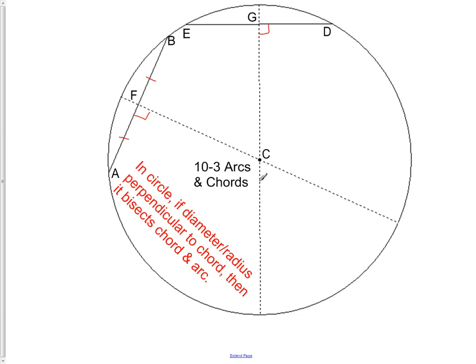What that means is, if you look at the picture here, we have the diameter right there. If the diameter is perpendicular to the chord, which is demonstrated by the right angle, then it bisects it.